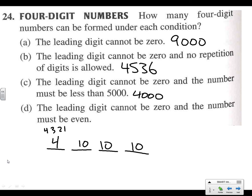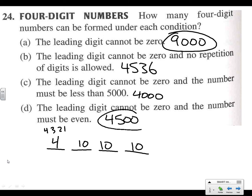For part (d), the leading digit cannot be zero and the number must be even. We already know there are 9,000 numbers where the leading digit isn't zero. Since it also has to be even, we just cut that in half to get 4,500 — half are even and half are odd.